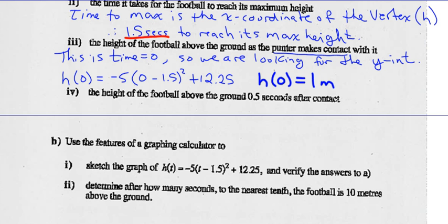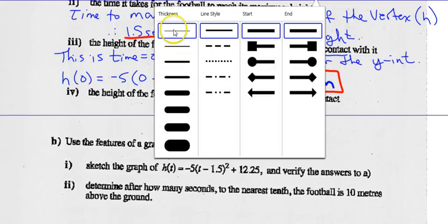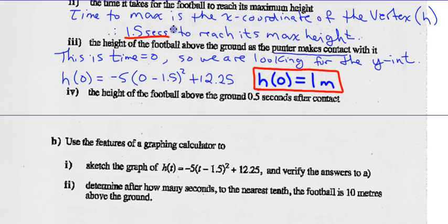Does that make sense? Would it make sense for the punter to contact the punt at 1 meter above the ground? Yeah. You think the punter is dropping the ball and his foot is coming off the ground? That would be about a meter off the ground. So that makes sense in the context of this question.